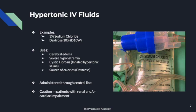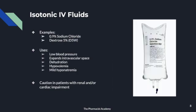D10W can be used as a source of calories for patients and is usually administered through a central line because of the risk of infiltration into tissues, which can cause significant damage — the larger central blood vessels are preferred. You want to be careful giving hypertonic IV fluids to patients who are renally or cardiac impaired, because these solutions shift water into the blood vessels, creating a hypervolemic state that the heart and kidneys may not tolerate.